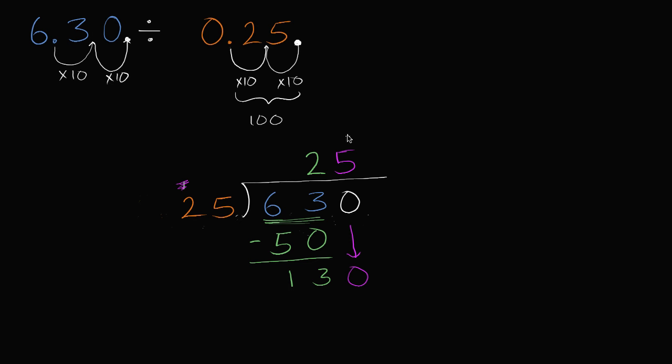I write it right above this 0 right over there. And then 5 times 25, 5 times 5, we already know what it is, but I'll just figure it out. 5 times 5 is 25, regroup the 2. 5 times 2 is 10, plus 2 is 12. Now we can subtract. And you might know offhand, 130 minus 125 is going to be 5. Or if you like, you could do a little regrouping. You could take a 10 from there and put the 10 in the ones place, and this becomes 10. 10 minus 5 is 5.